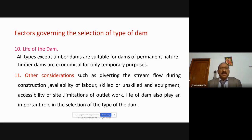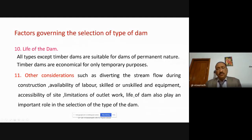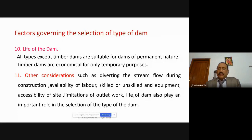Accessibility to the site is another important parameter. Limitations of the outlet works and the life of the dam also play an important role in selection of the type of dam. Engineers prefer good locations where the life of the dam could be more in terms of providing service to the people rather than locations where the life may be only 30–40 years.